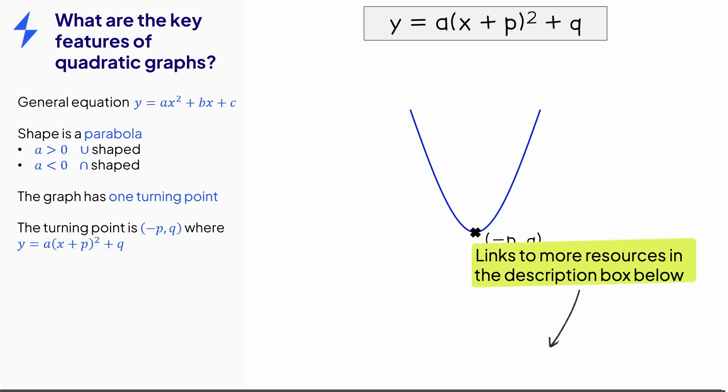Quadratic graphs also have one line of symmetry, which is a vertical line, and goes through the turning point. The equation of this line is just x equals negative p.